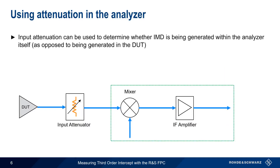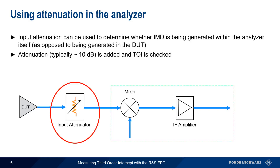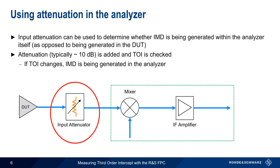Remember that we can use input attenuation to determine if the intermodulation products are being created by the DUT or within the analyzer. We add attenuation, typically on the order of 10 dB, and observe the measured distortion level. If third-order intercept changes after attenuation is added, the products are being generated in the analyzer. If third-order intercept doesn't change, then the products are being generated externally.